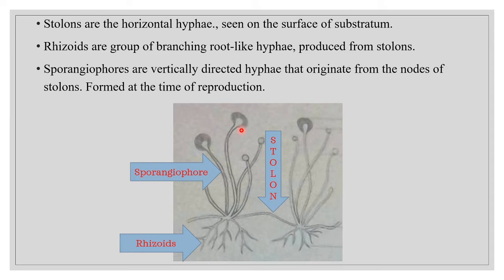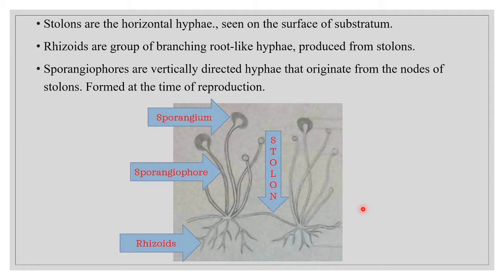Sporangiophores are clusters of long, unbranched, and erect fertile hyphae produced from the stolons. They grow vertically upwards, directly opposite to the rhizoids, and produce a spherical structure at their tip called a sporangium. In a mature thallus of Rhizopus, we can see three different parts: rhizoids, sporangiophores, and stolons. Rhizoids and stolons are vegetative structures, while sporangiophores are reproductive structures.